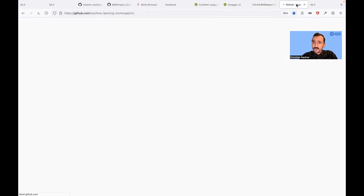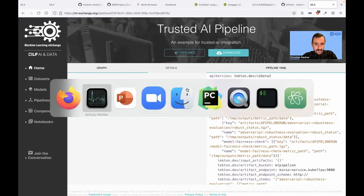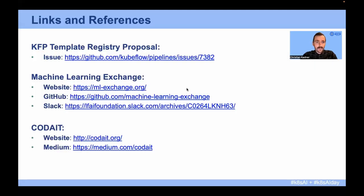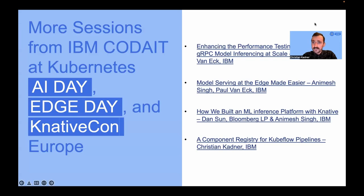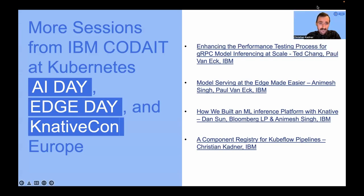Let's jump back to the presentation. There are a few links that might be of interest: a link to the KFP template registry protocol issue on the Kubeflow Pipelines repo with links to the RFE and design docs, links to the machine learning exchange GitHub repository and website, and you can reach out to us via Slack. For the Center for Open Source Data and Technologies, you can visit our website or find our articles on medium.com. We also have four sessions from CODAIT at the KubeCon Europe co-located events at AI Day, Edge Day, and KnativeCon. Feel free to check them out. Thank you, and see you next time.